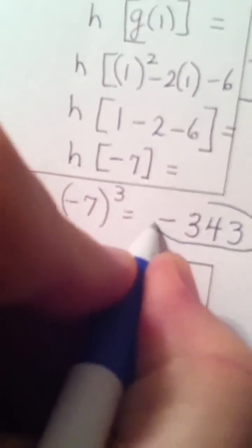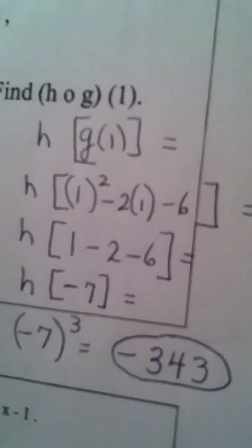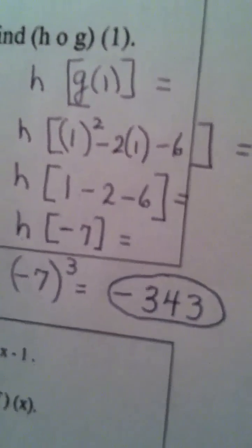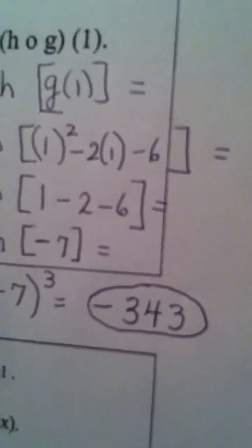And that is our answer to the second question. h composed with g of 1 is negative 343. And we're done.